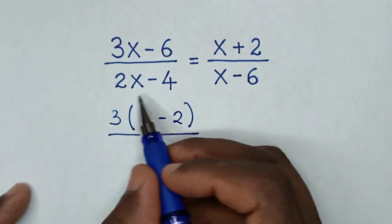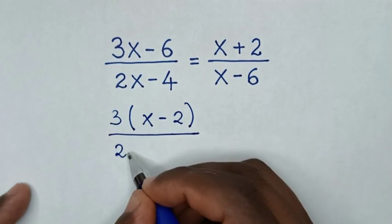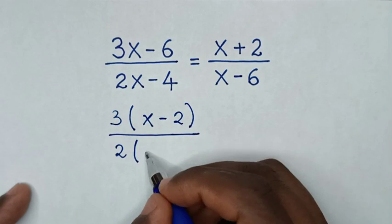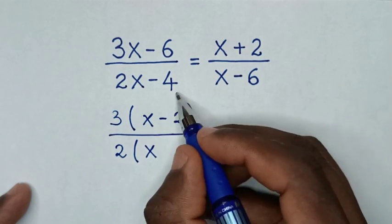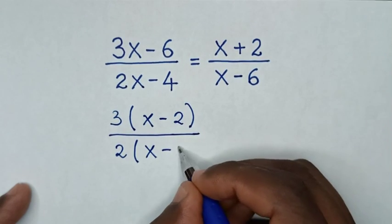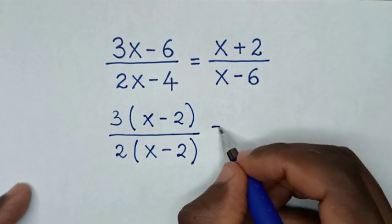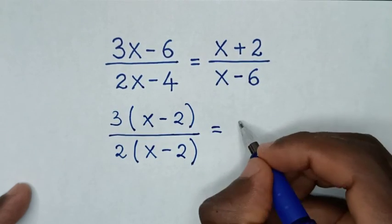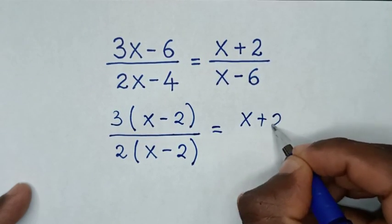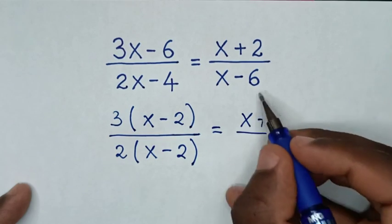In the denominator, 2 is common. So we take 2 out of the bracket, 2x divided by 2 is x, negative 4 divided by 2 is negative 2, is equal to x plus 2 over x minus 6.